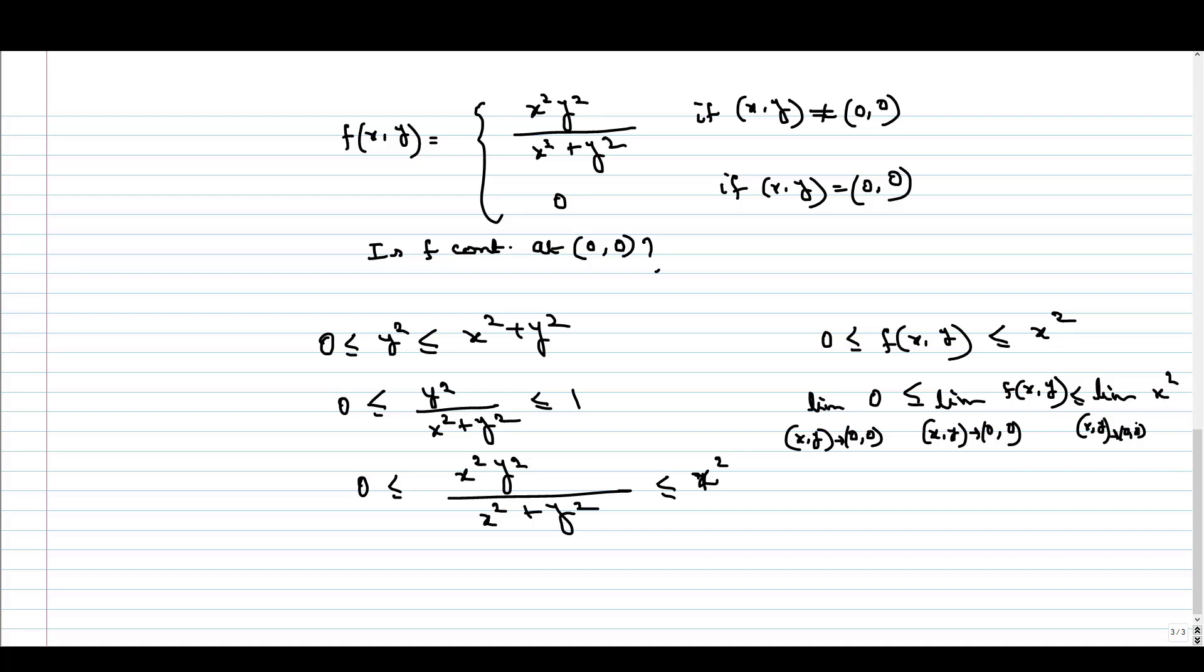Now this is only a function of x², and as we are tending to origin, this is obviously going to 0. So by sandwich theorem, we can conclude that the limit of (x, y) tending to (0, 0) of f(x, y) is 0, which matches with the value at the origin f(0, 0).